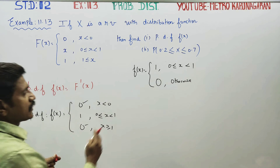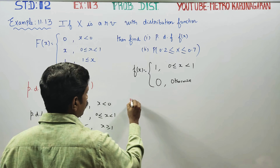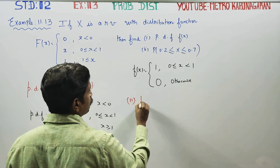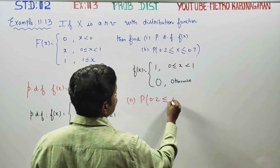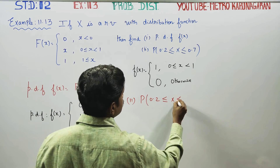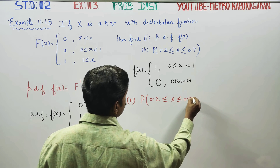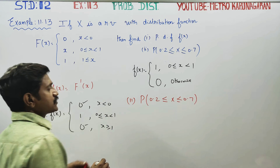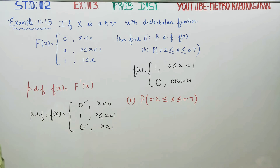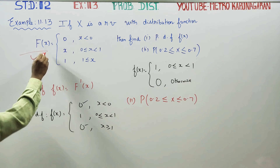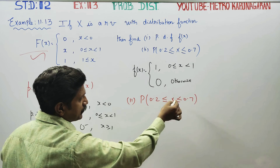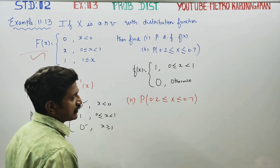The second question is: find the probability of 0.2 less than x less than or equal to 0.7. Using the cumulative distribution function is very easy to find the probability between a given interval.